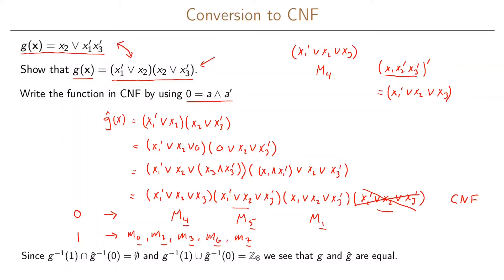We also cover all possible indices: 0, 1, 2, 3, 4, 5, 6, and 7. There are no overlaps between the min terms and max terms — that is, between the zeros and ones in the truth table — and all rows of the truth table have either a zero or a one. From this we can conclude that g(x) and g-hat(x) are equal.